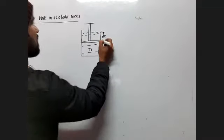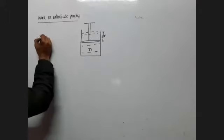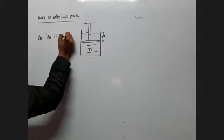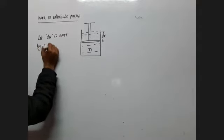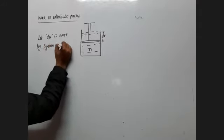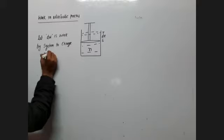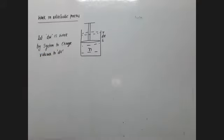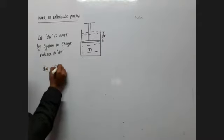Let dW be the work done by the system. When the volume changes by dV, the work is: dW = p·dV.